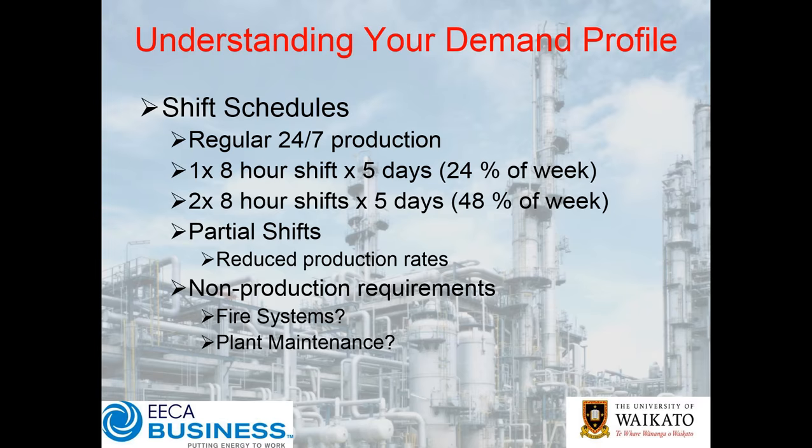If you go to two eight-hour shifts a day, five days a week, you get up to 48%. You might also have partial shifts where some parts of the plant might run a couple of shifts versus other parts only running a single shift, or some parts might be 24/7 or 24/5. So it's about understanding that different parts of the system are going to have a different schedule or requirement.